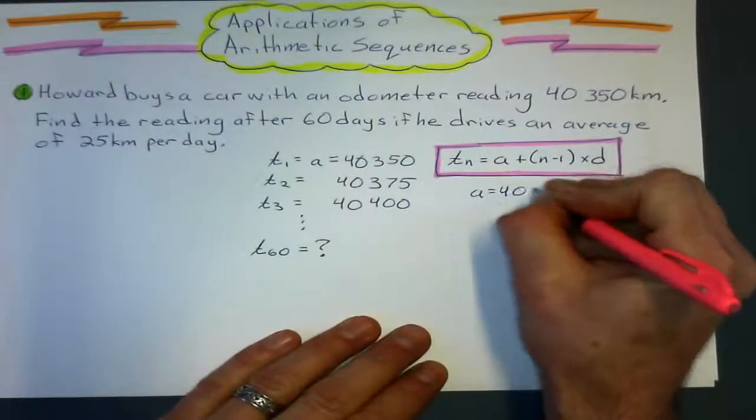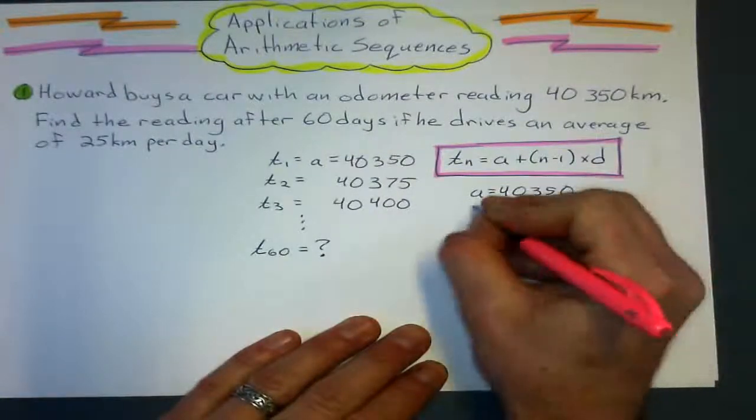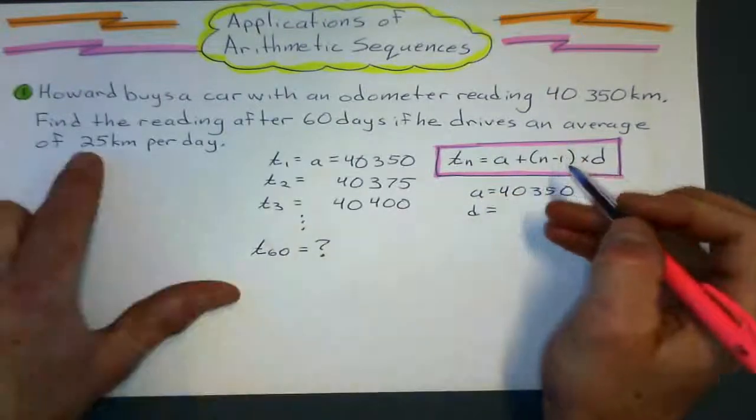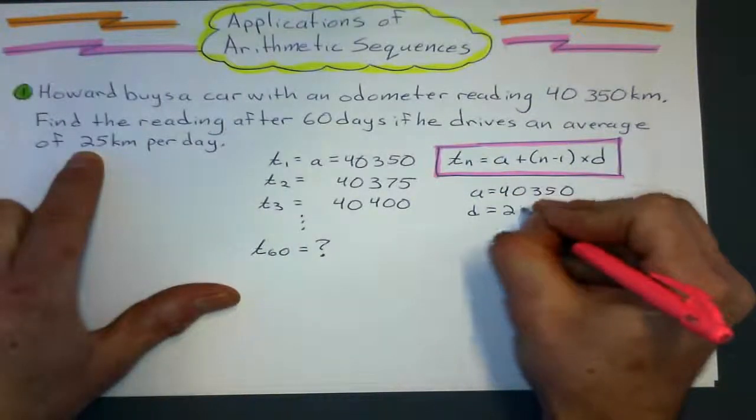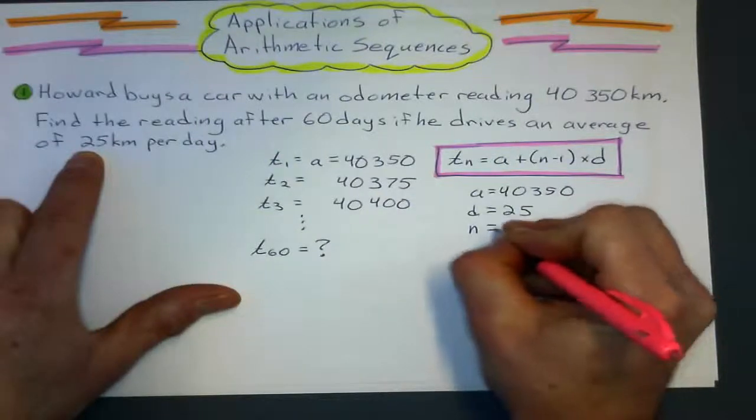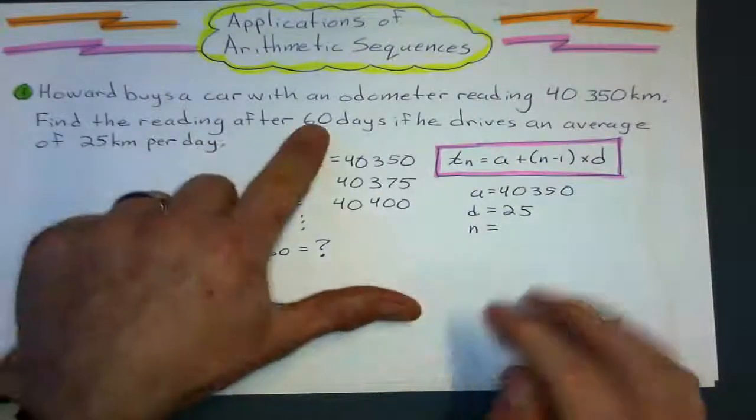First term, 40,350. The common difference, that's 25 every day. It's going up 25. Common difference is 25. n is which term I want. I want the 60th term.